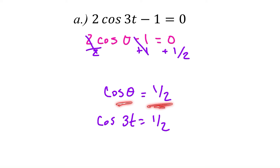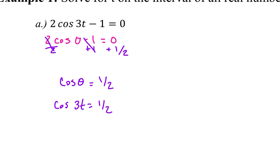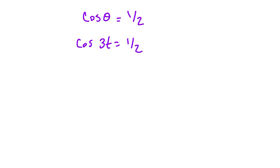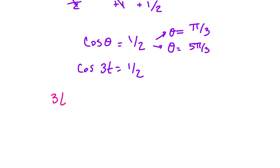When would cosine of theta equal 1/2? It's still the same process as before — we're ignoring the fact that there's a 3t here. When would cosine give us 1/2 as a solution, noting that we are solving on the interval of all real numbers, so we are solving using infinity. We know that 1/2 comes up on two spots for cosine: theta equals π/3 because it's the x value, so it's in quadrant 1 and 4, and also at 5π/3. But now it's not theta — it's 3t equals π/3 and 3t equals 5π/3.